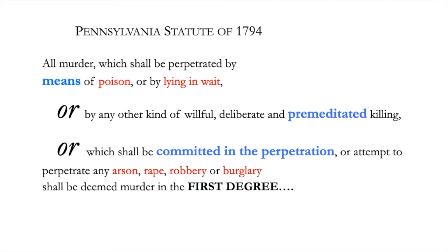The third way of counting as first-degree murder is by being connected with any of four enumerated felonies: arson, rape, robbery, and burglary. This is akin to the so-called felony murder rule, which we'll get to later. The second way of elevating murder to first degree is by showing that the perpetrator premeditatedly killed with malice aforethought. Malice aforethought marks the line between murder and manslaughter, but add in premeditation and you get murder in the first degree.